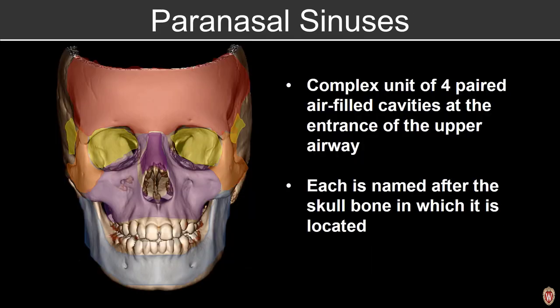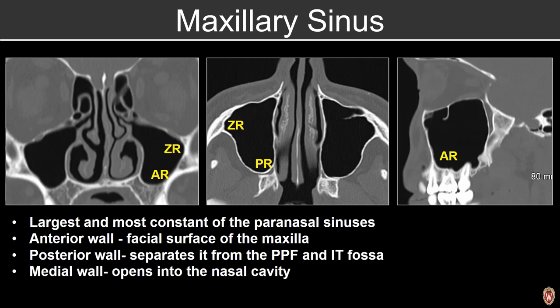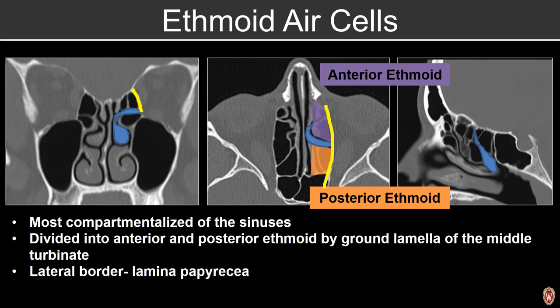The paranasal sinuses are a complex unit of four paired air-filled cavities at the entrance of the upper airway, each named after the skull bone in which it's located. The maxillary sinus is the largest and most constant, with three named recesses: the alveolar recess adjacent to the maxillary alveolus, the zygomatic recess superior and lateral, and the palatine recess posteriorly. The ethmoid air cells are the most compartmentalized, divided into anterior and posterior by the ground lamella, with the lateral border being the lamina papyracea.